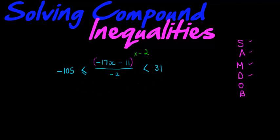So I'll have 31 times negative 2 is smaller than, so look how the smaller than now comes to this side, is smaller than negative...